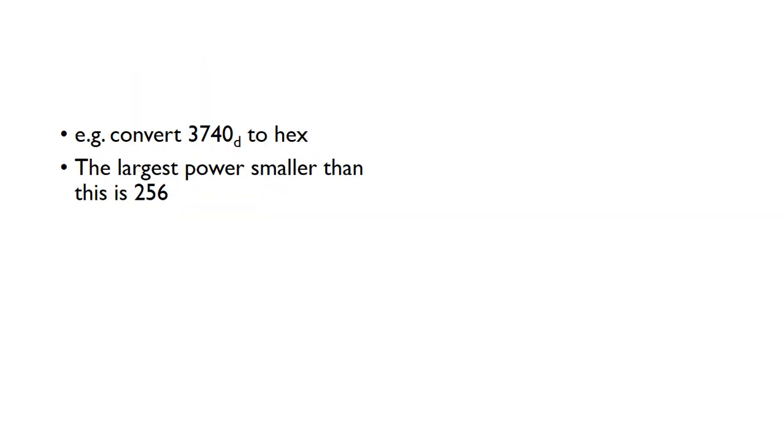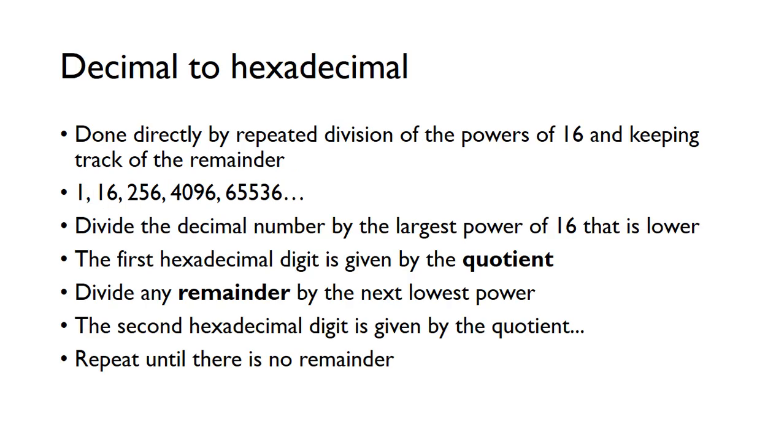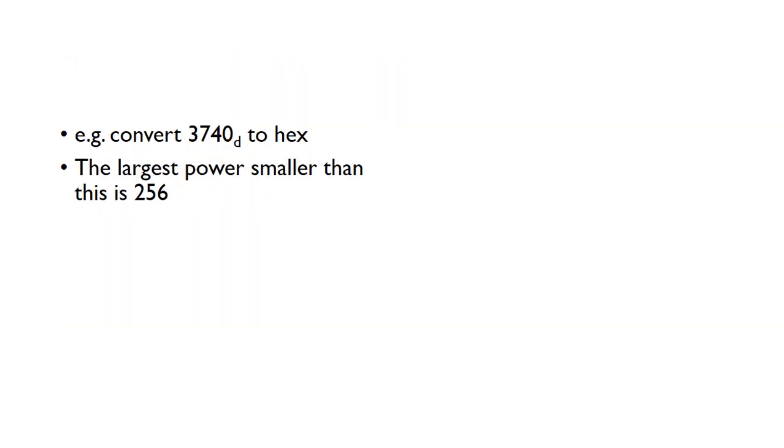So we'll look at an example. So we've got 3,740 in decimal, once it converts it to hexadecimal. So we know the largest power smaller than this is 256. The next power after that is 4,096, that's too big, so we need to start with 256. So we'll just do 3,740 divided by 256, so that gives us 14 remainder 156.